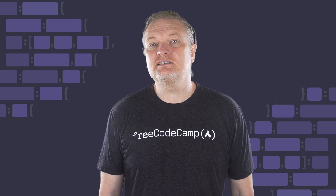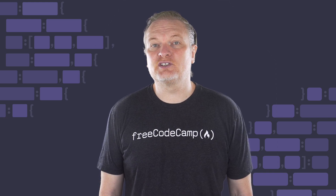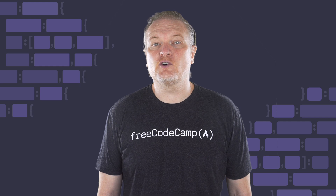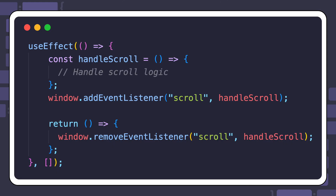Here's the syntax for returning a cleanup function from the useEffect hook. For instance, if you add a scroll event listener, you can clean it up by removing it in your cleanup function.